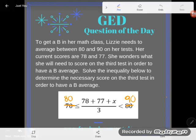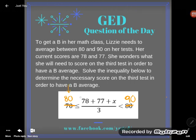Now let's read the problem. It says to get a B in her math class, Lizzie needs to average between 80 and 90 on her tests. That's why I knew I needed an 80 here and a 90 here.